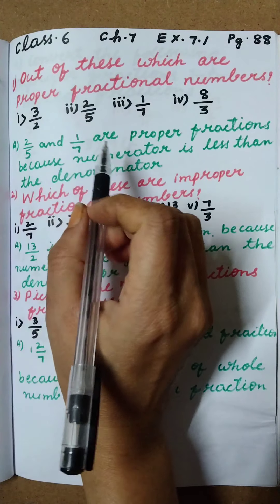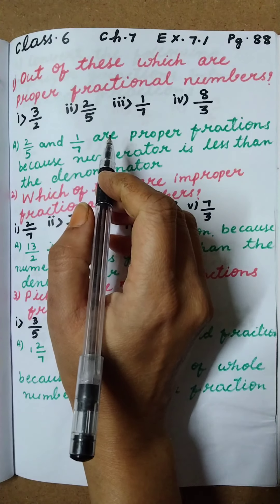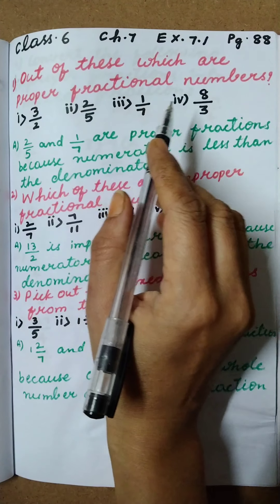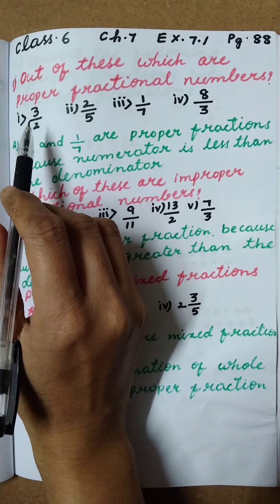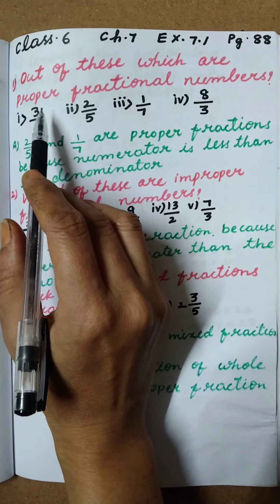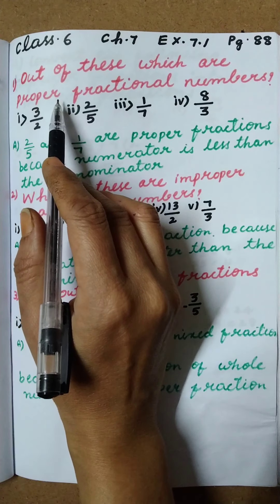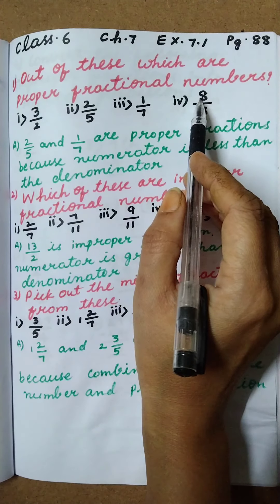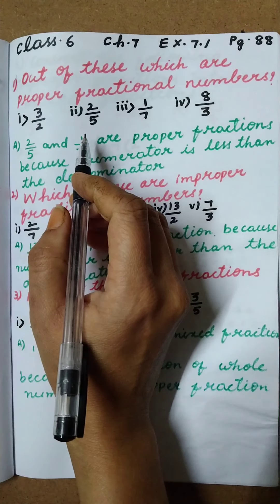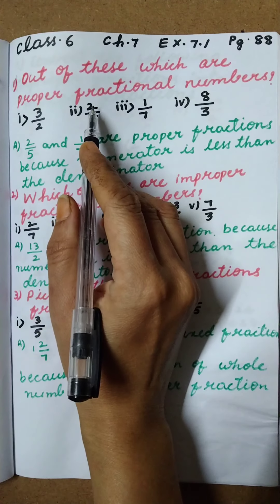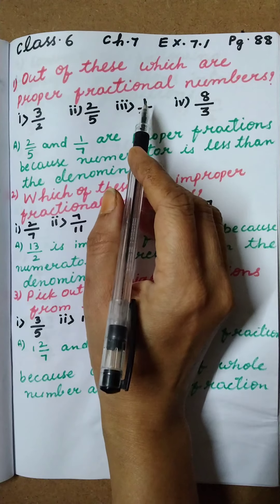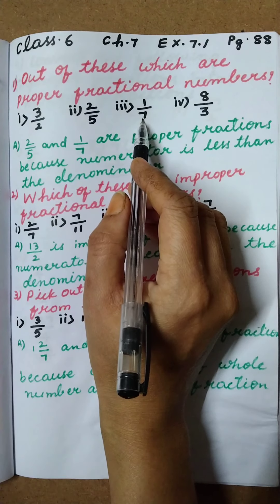What is the definition of proper fractions? Numerator is less than the denominator — these are called proper fractions. Here, which ones have numerator less than the denominator? Here numerator is greater. Here also numerator is greater. So which one is the proper fraction? Here numerator is less than the denominator. Here also numerator is less than the denominator.